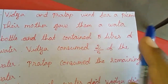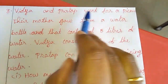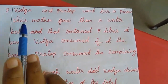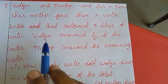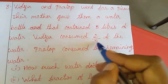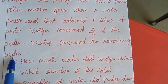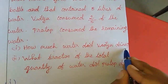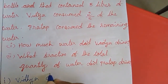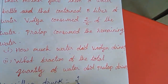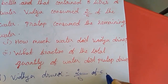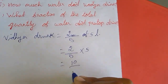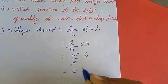Vidya and Pradhaap went for a picnic. Their mother gave them a water bottle with 5 liters. Vidya consumed 2 by 5 of the water. How much did she drink? 2 by 5 of 5 liters: 2 by 5 into 5 equals 10 by 5. If you cancel, you get 2. So Vidya drank 2 liters.